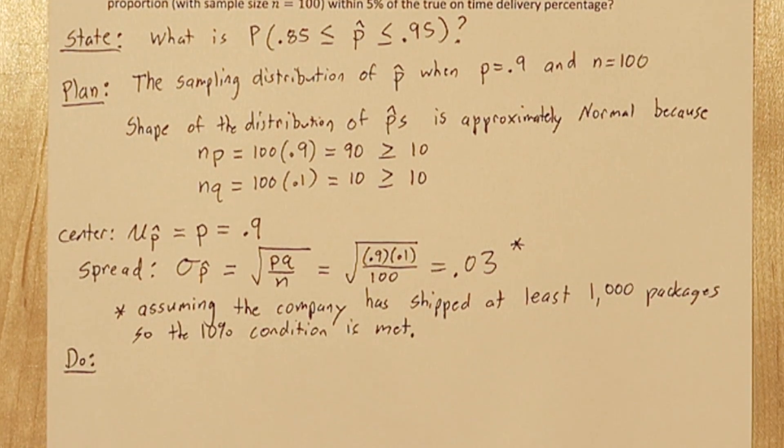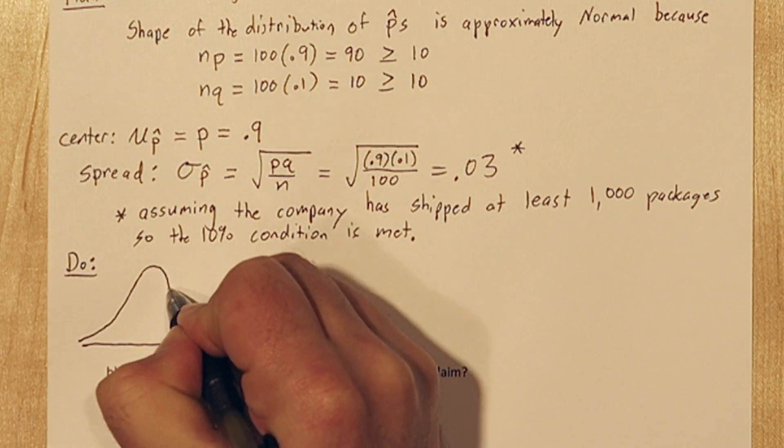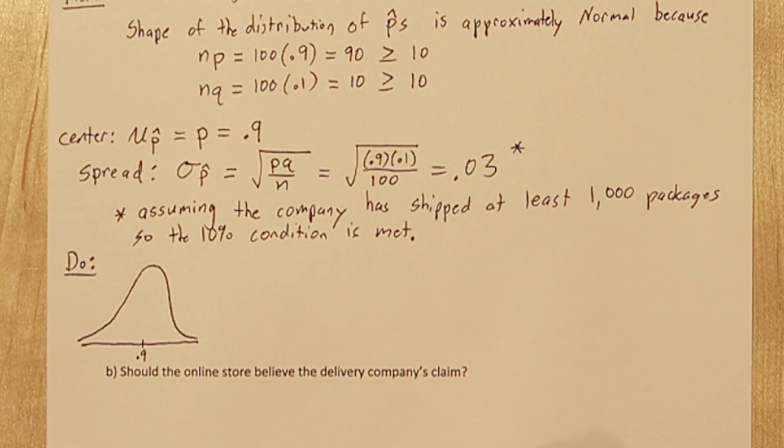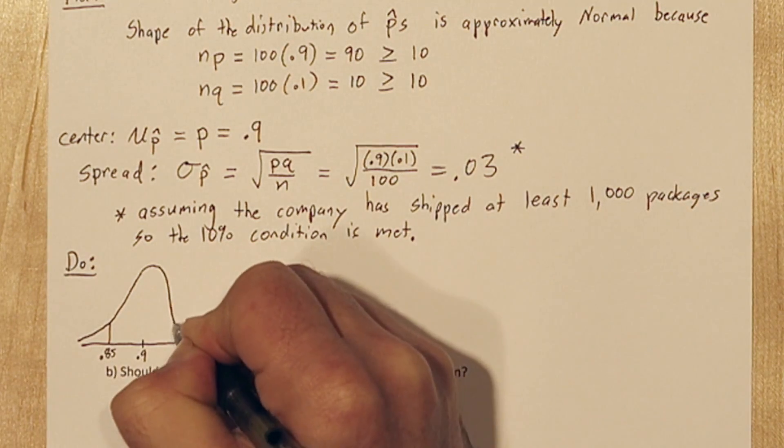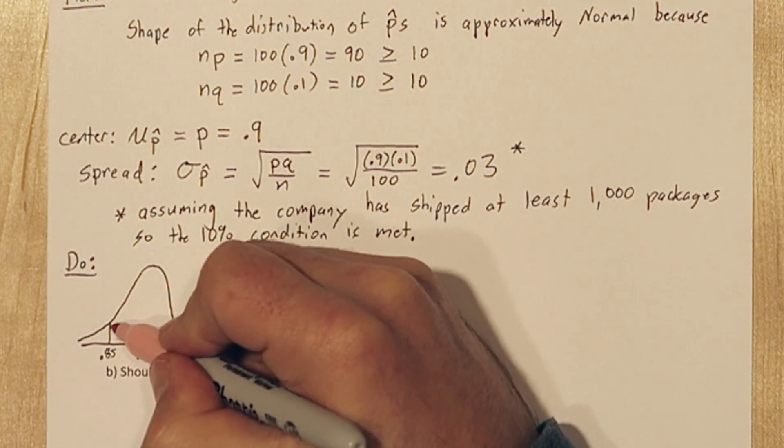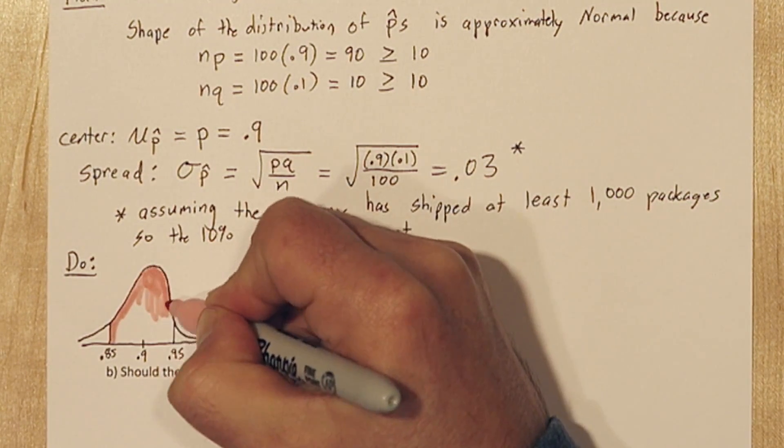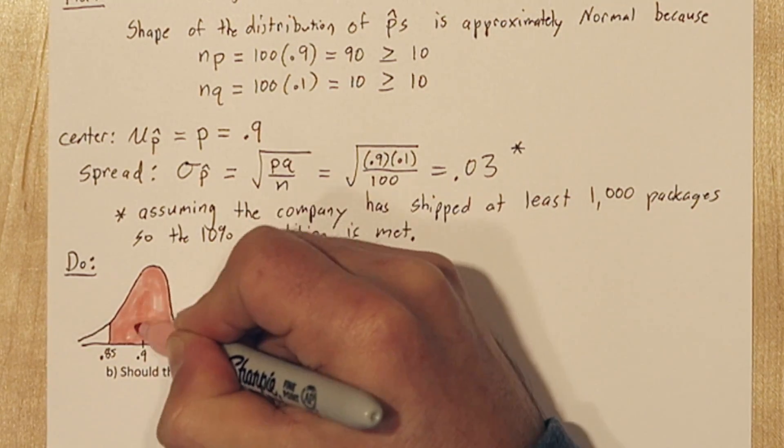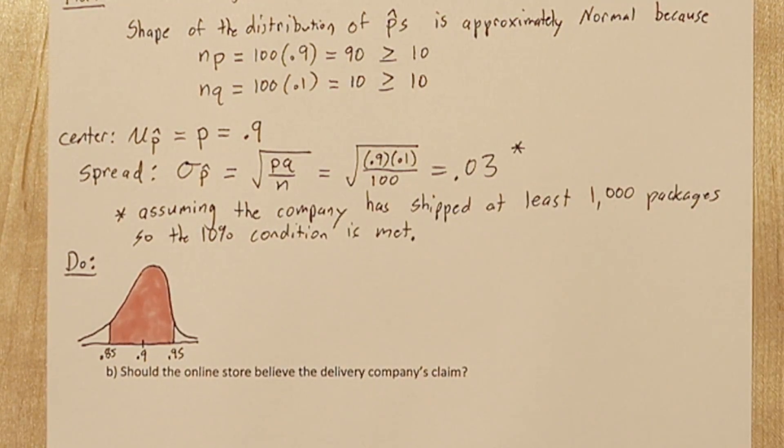Let's start by drawing a normal curve. The center of our distribution is at 0.9, and since our standard deviation is 0.03, and we want to go all the way to 0.85 and 0.95, we need to go 1 and 2 thirds of a standard deviation in each direction. So let's shade that area.